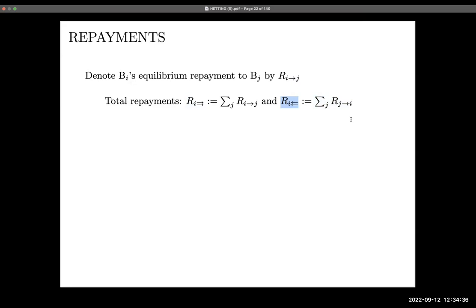On the assumption that new debt is super-senior: this is something banks would optimally choose ex ante — covenants would be set to allow super-seniority for new debt. This shows the optimality of having repos with super-seniority. Even if borrowing by repo or secured debt violates a negative pledge covenant, the secured creditor maintains seniority, and the paper shows the optimality of that covenant structure.